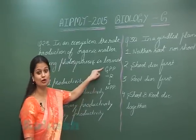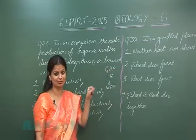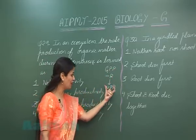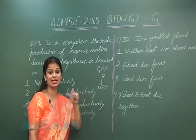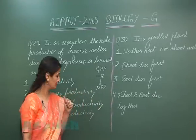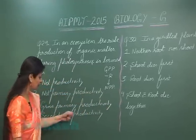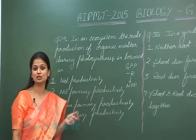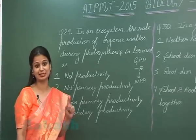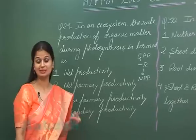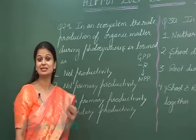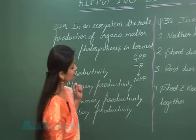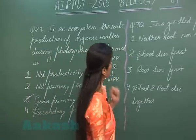Gross primary productivity is the rate of formation of organic matter; some of it is used by the plant, and what is left is NPP — net primary productivity. Now, secondary productivity is the rate of formation of organic matter at the consumer level, that is at the animal level.